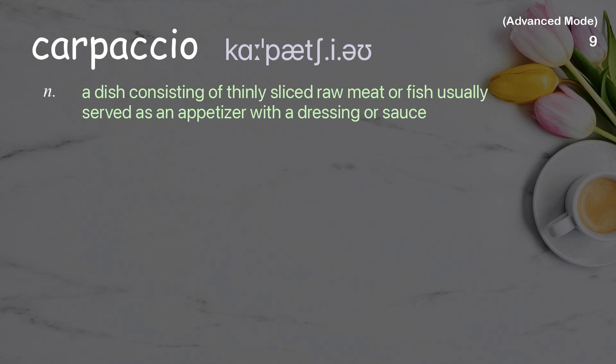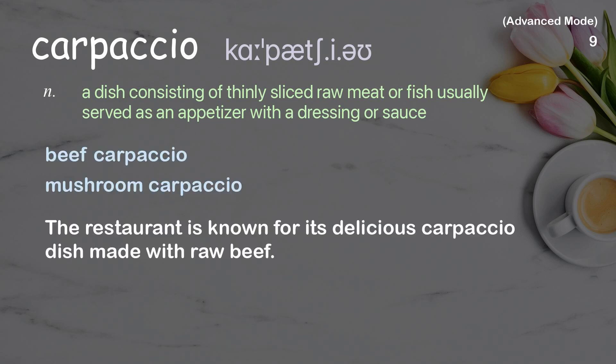Carpaccio: a dish consisting of thinly sliced raw meat or fish, usually served as an appetizer with a dressing or sauce. The restaurant is known for its delicious carpaccio dish made with raw beef.